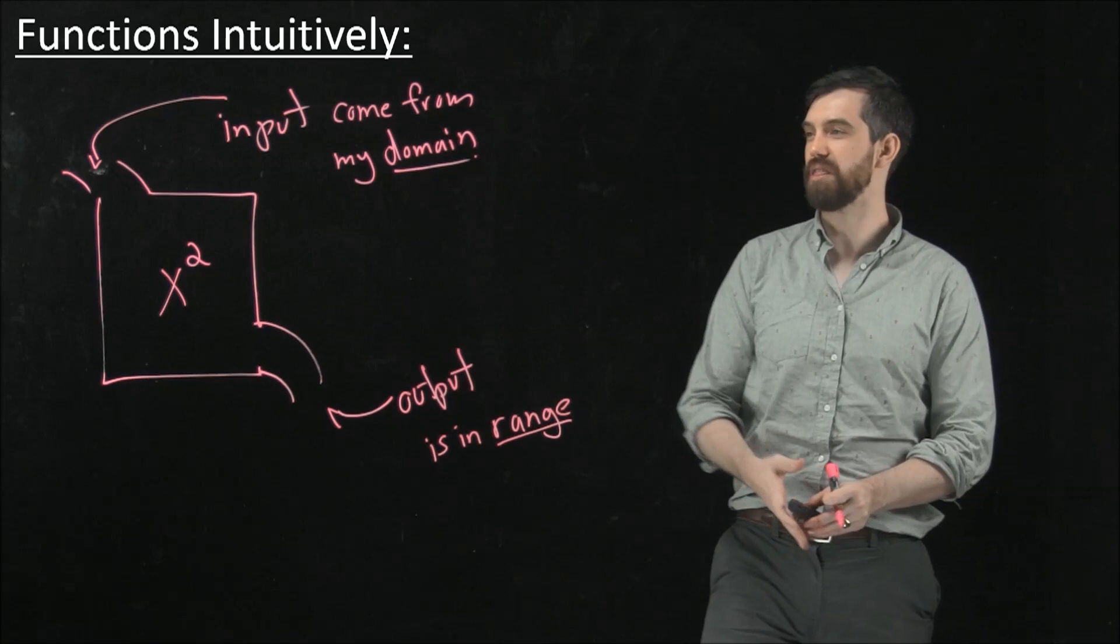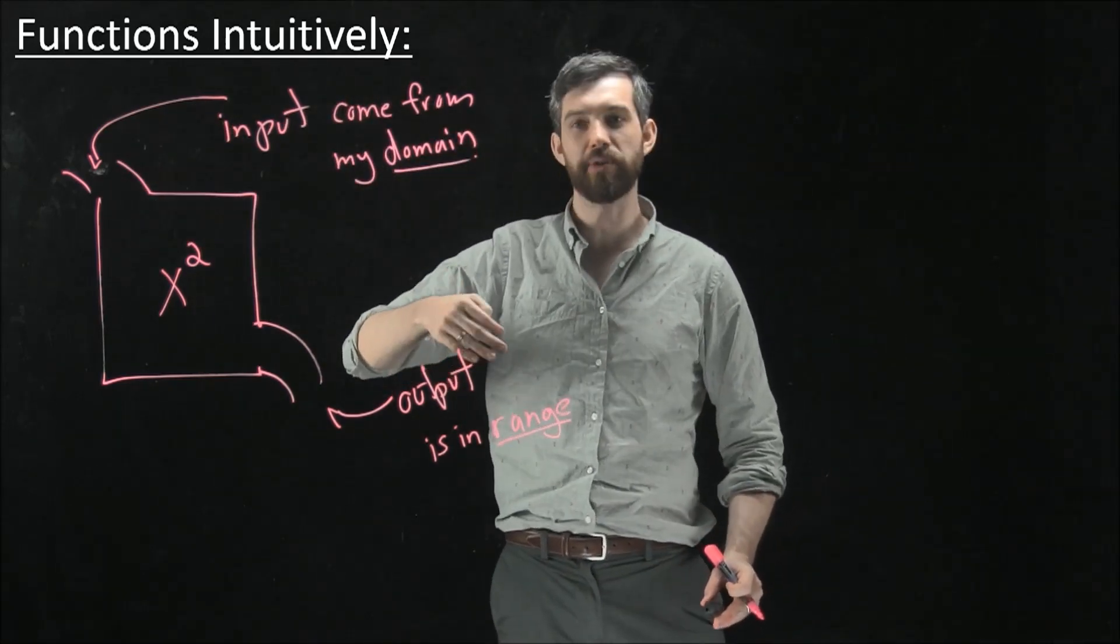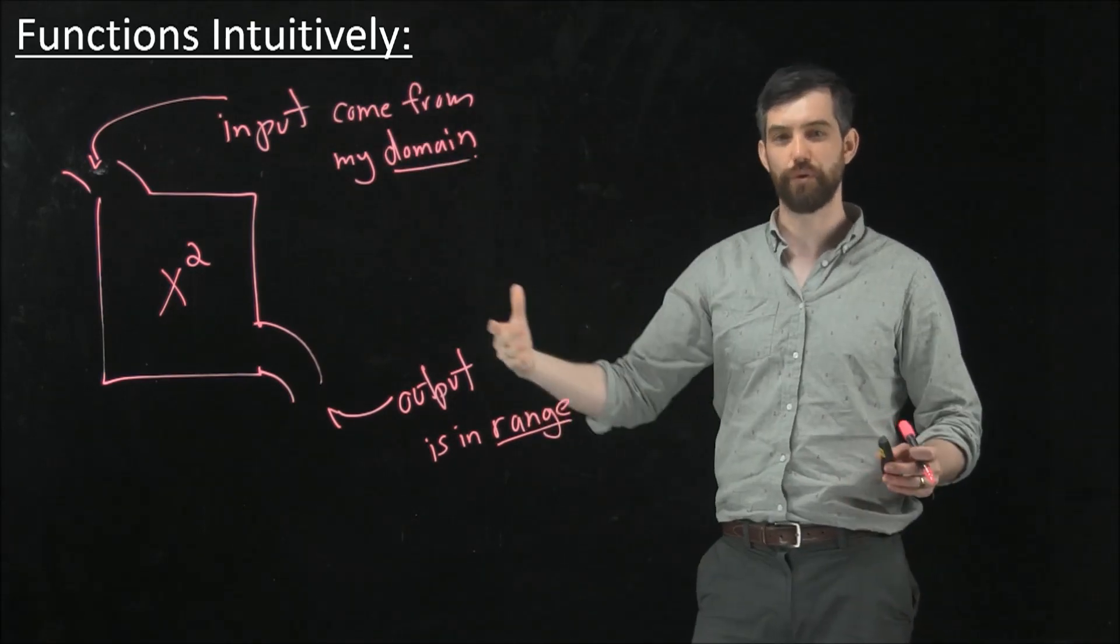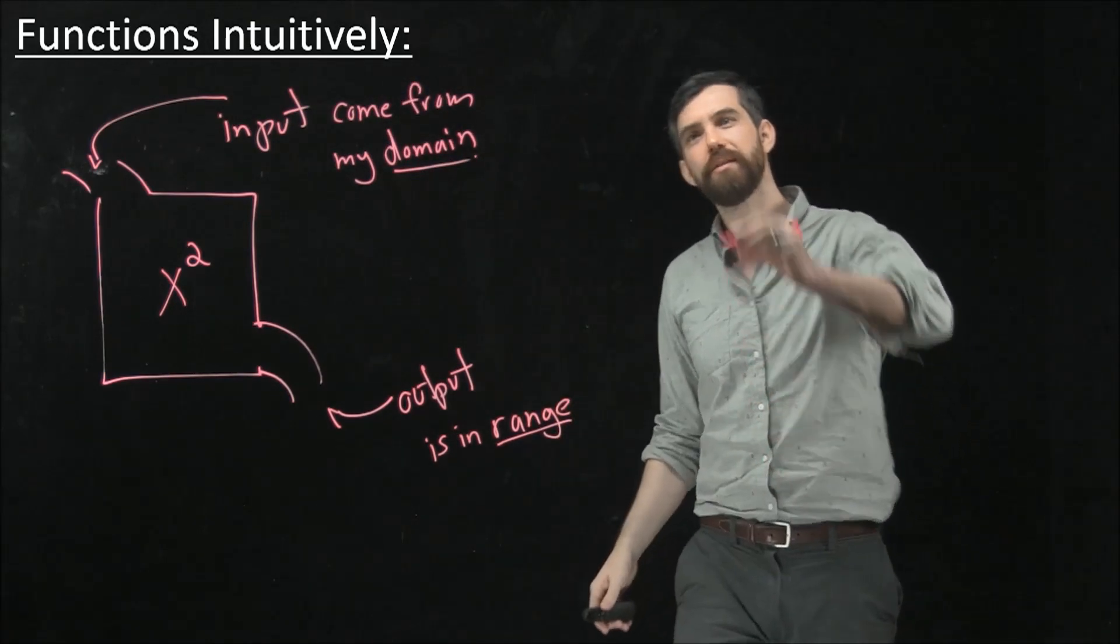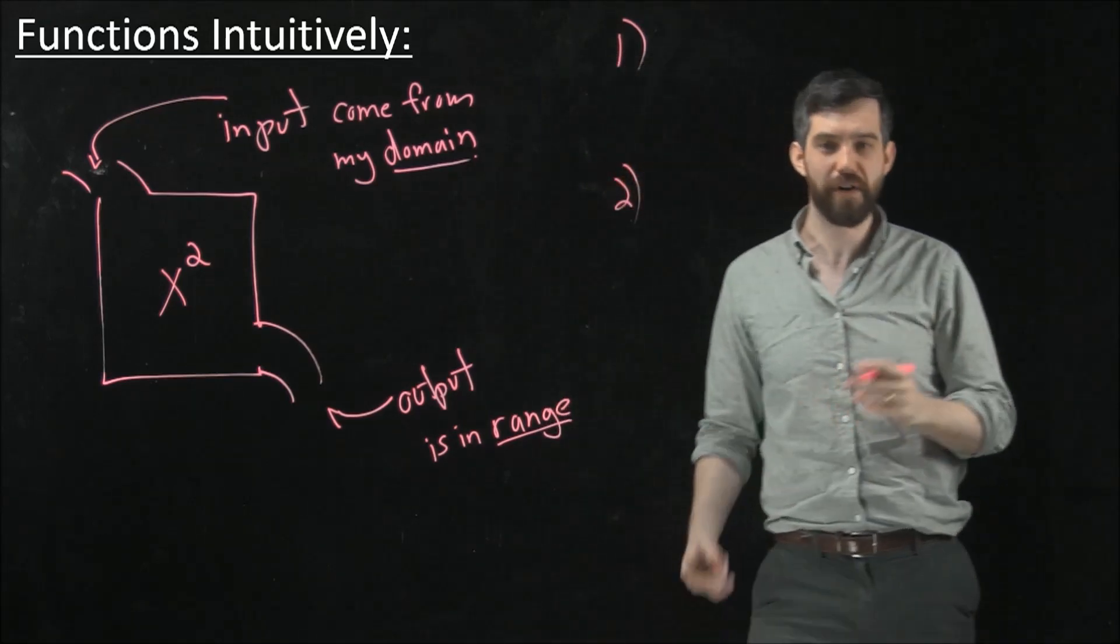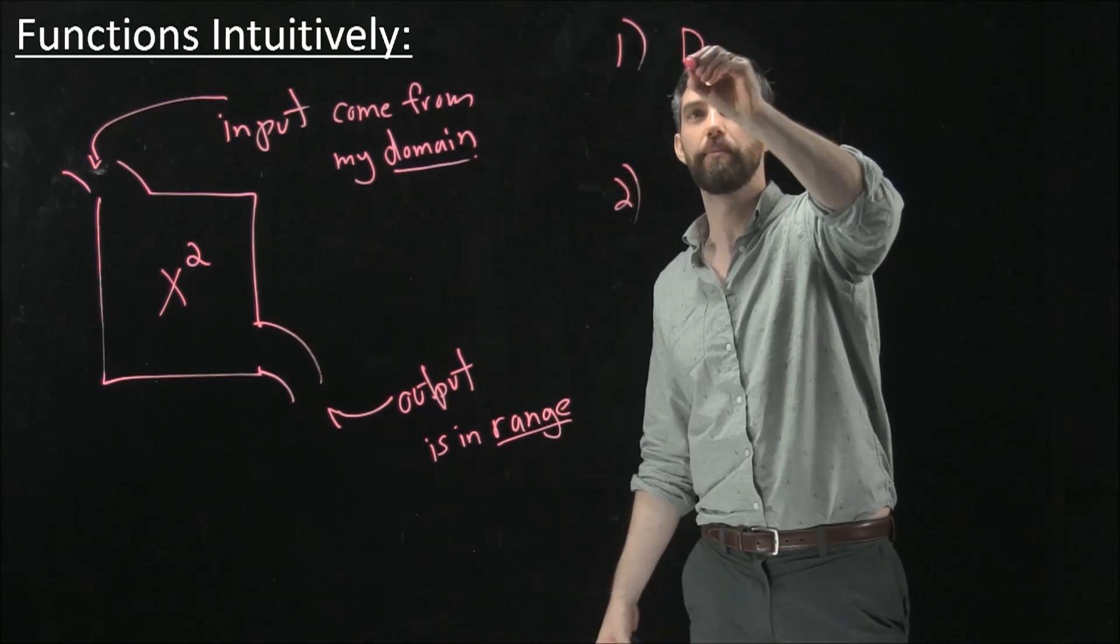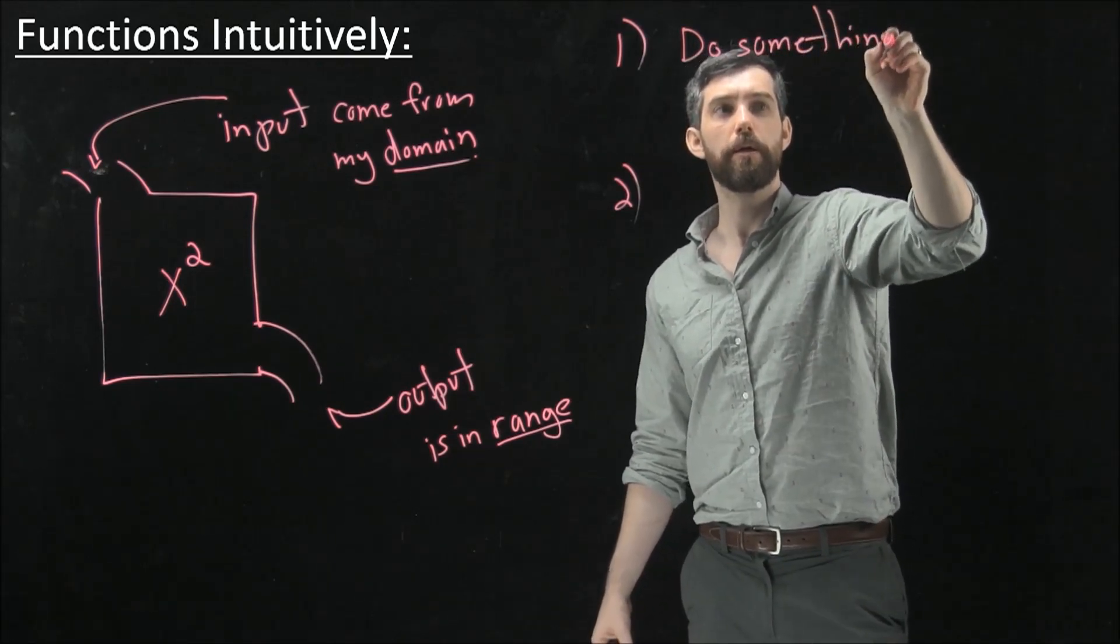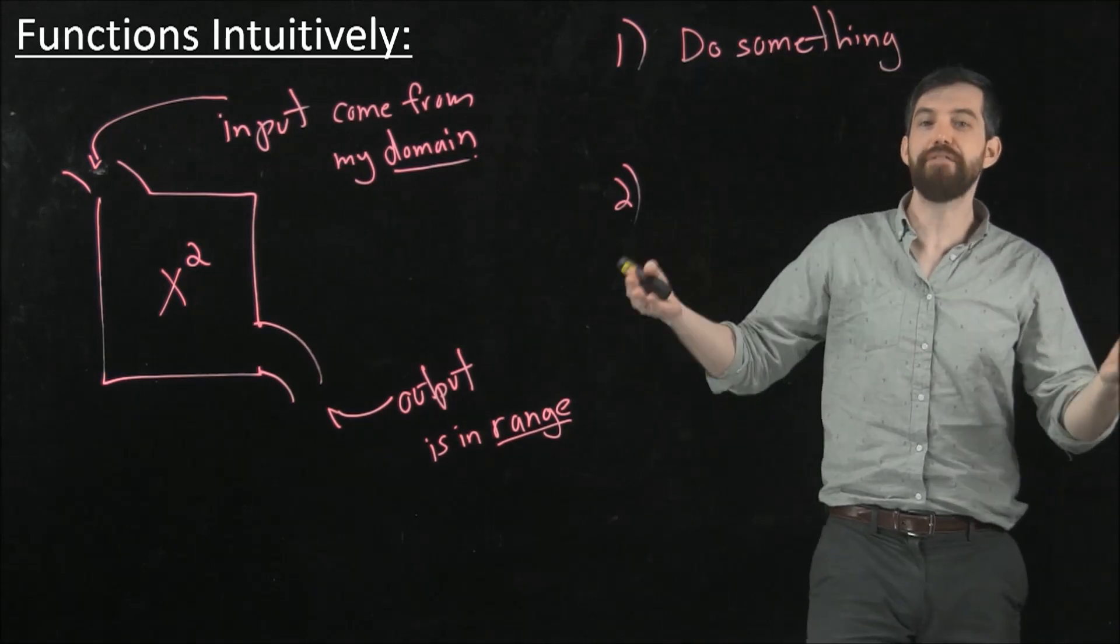And so I can think that 3 comes in, it squares and 9 goes out. And minus 1 comes in and 1 goes out and so forth. And then the two properties that I want my function to have is I want it to do something.